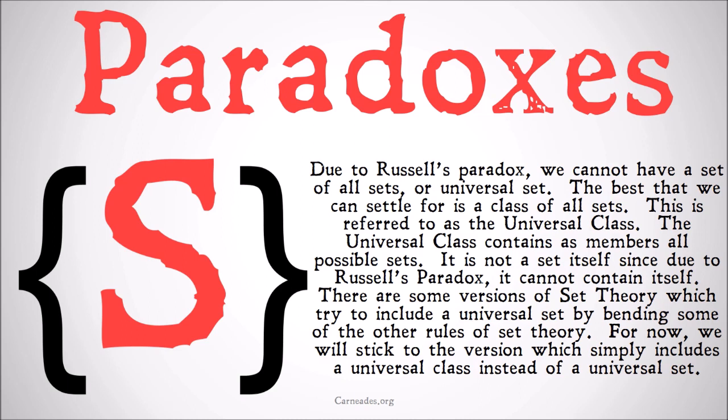Classes, just like sets, are things that have members in them — they're groups. They obey all the same rules as sets, at least so far. Classes are big, sets are small, and the universal class is the class that contains every single set. Every member of the universal class is a set, and all sets are members of the universal class. It is not a set itself, since due to Russell's paradox it cannot contain itself.